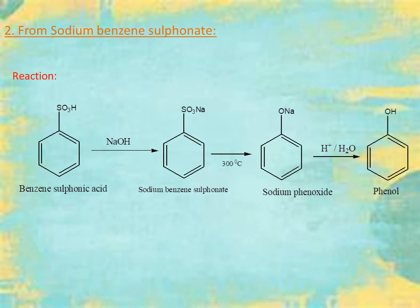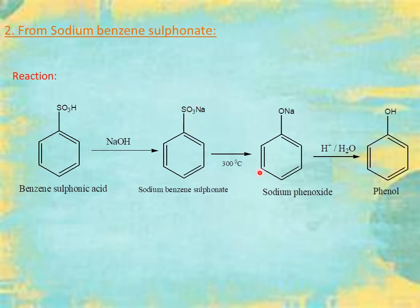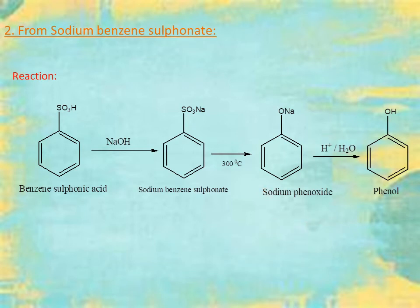The next method is from sodium benzene sulfonate. Sodium benzene sulfonate is obtained by treating benzene sulfonic acid with NaOH — the H is replaced by Na. Sodium benzene sulfonate, upon heating at 300 degrees centigrade, undergoes loss of SO₂, and the remaining oxygen forms sodium phenoxide. Sodium phenoxide upon acidification gives phenol. So: heat sodium benzene sulfonate at 300°C, lose SO₂, get sodium phenoxide, then acidify to get phenol.